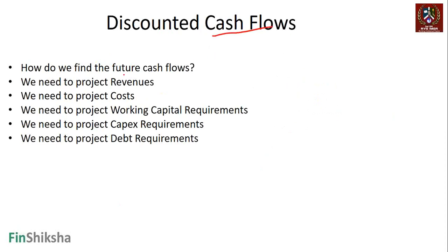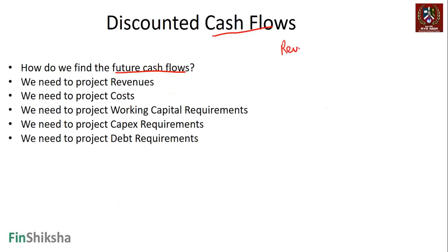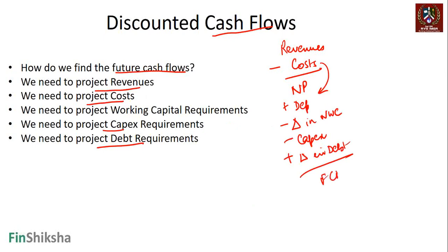Under discounted cash flows we need to find future cash flows. For the FCFE equation we need revenues, and revenues minus costs gives us net profit. Depreciation is a non-cash cost and part of the cost, so we project that. We need to project revenues, costs, working capital requirements (minus any change in net working capital), capex requirements (minus any capital expenditure), and debt requirements (plus any change in debt). That gives us FCFE.